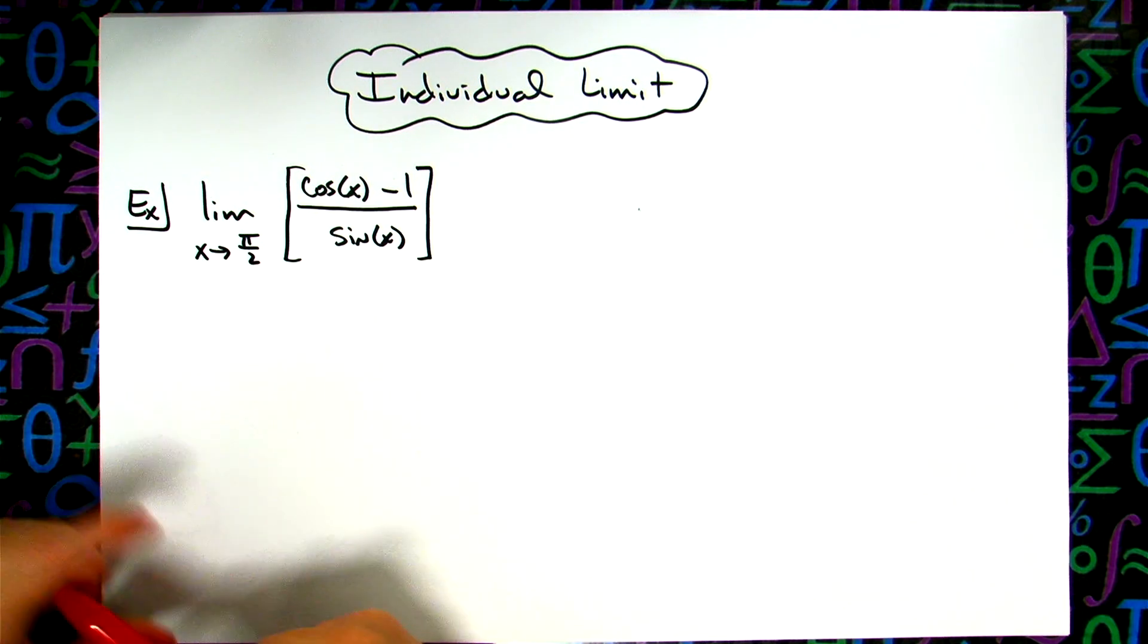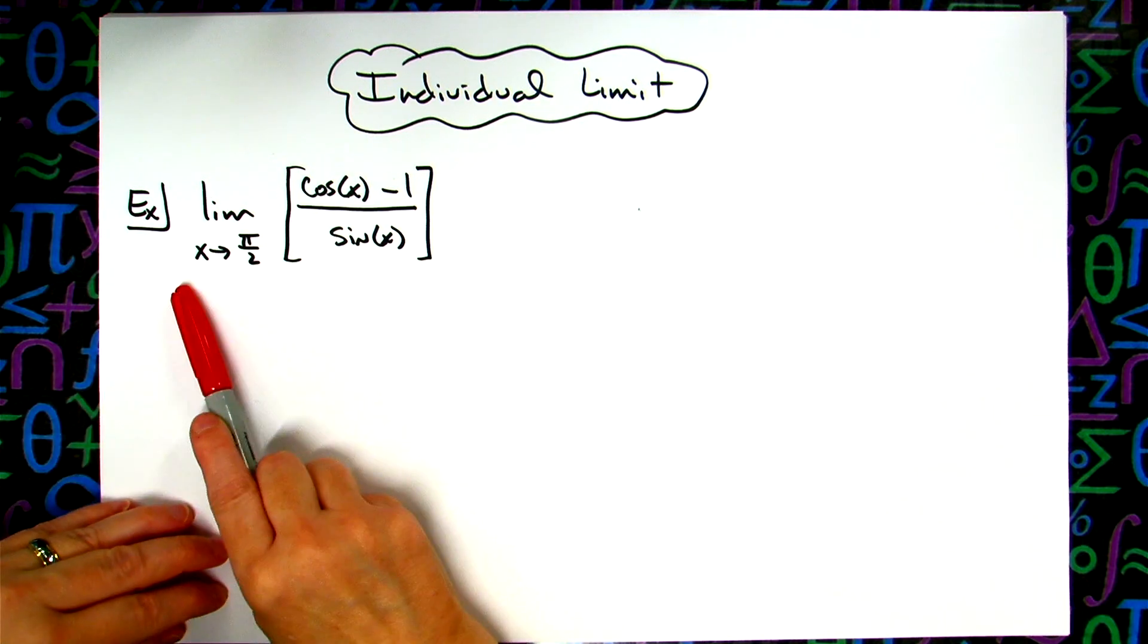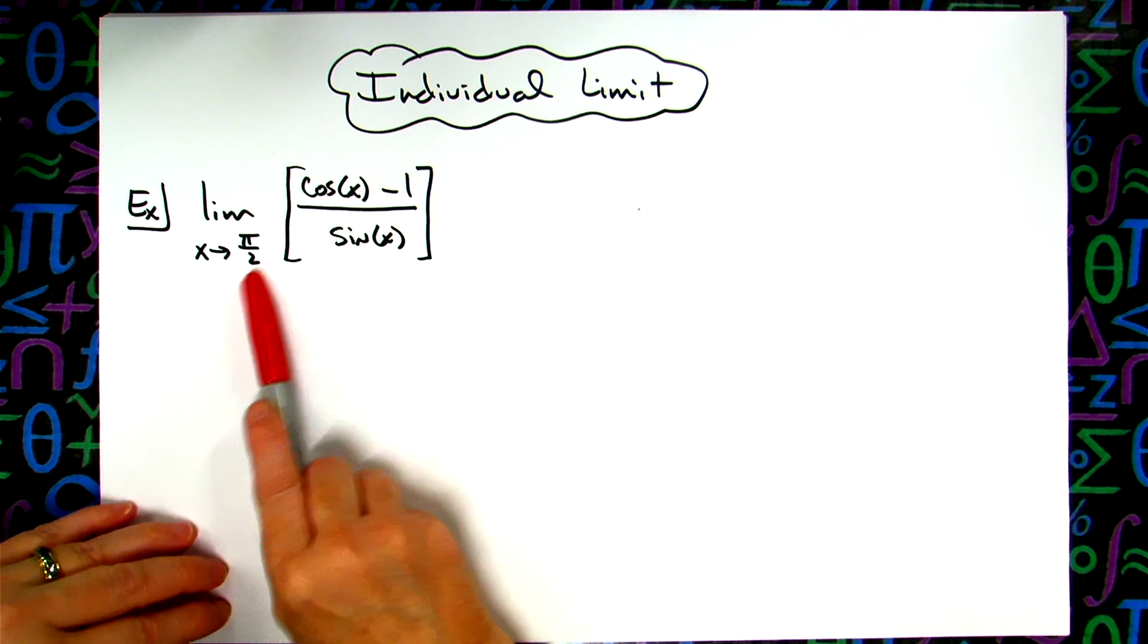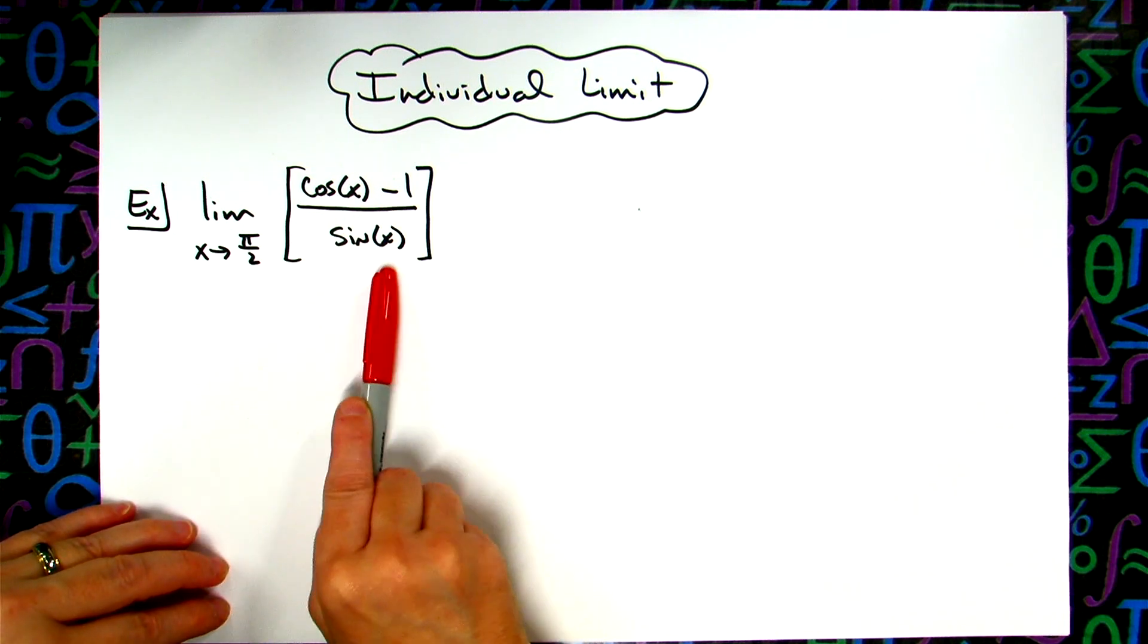In this video we're going to take a look at an individual limit. We're going to have the limit as X approaches pi over 2 of cosine X minus 1 over sine X.